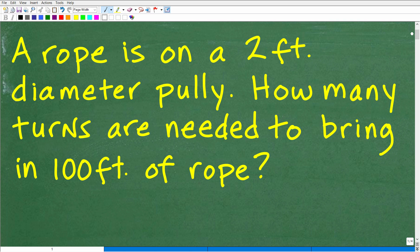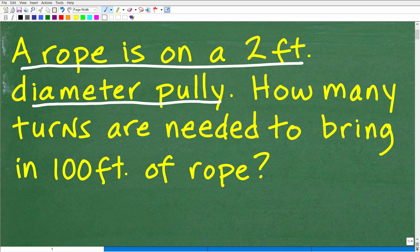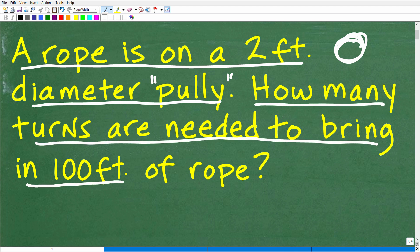So let's go ahead and read the problem right now. It says a rope is on a two-foot diameter pulley. And just in case you don't know, a pulley is one of those things that things get wrapped around, just in case you didn't remember what a pulley was. And the question is, how many turns are needed to bring in a hundred feet of rope on this pulley?